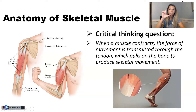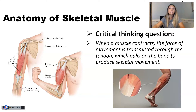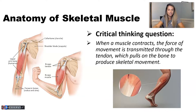When the gastrocnemius muscle contracts and shortens, it pulls up on your heel. Stick your leg out and contract your calf muscle — what happens? Your heel automatically pulls up, because you've got a tendon pulling on your heel — that's where it attaches.